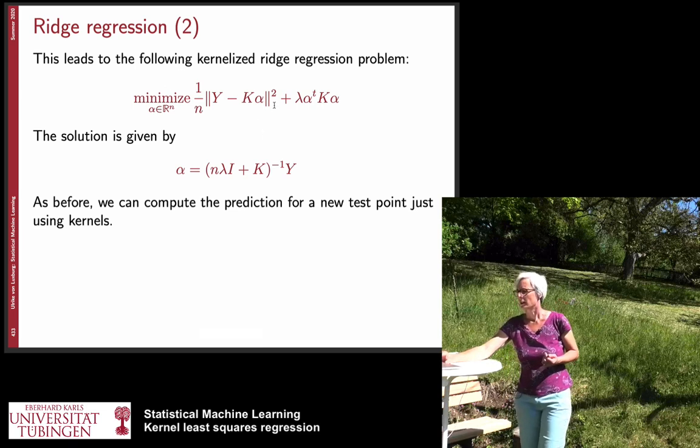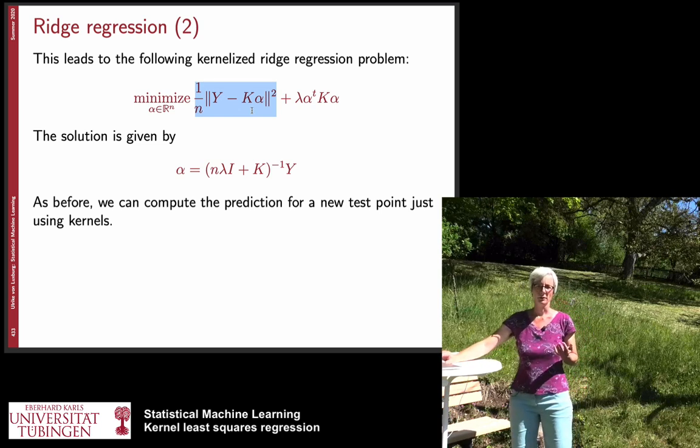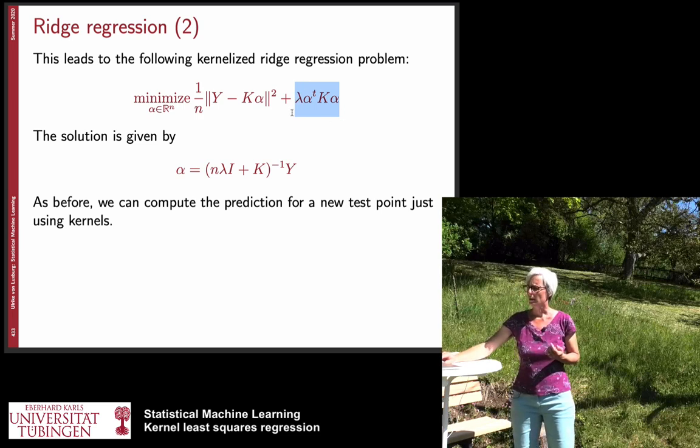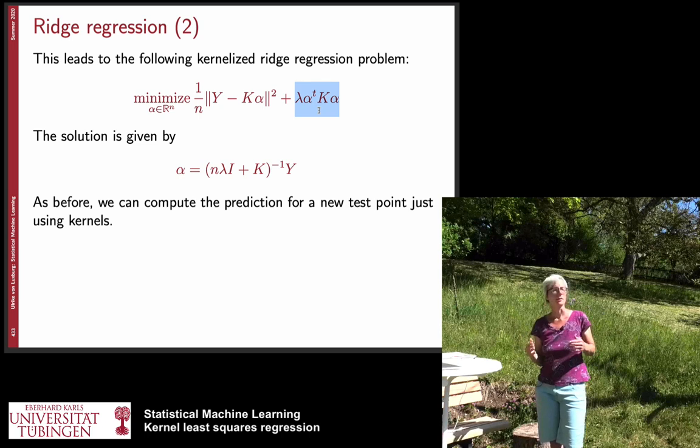And indeed this is what you can do. If you do that the first term of the problem is the same as for the unregularized version and now we end up with a regularization term which is now has this form it's lambda and then this norm of omega gets replaced by alpha transpose k alpha.